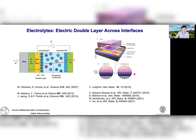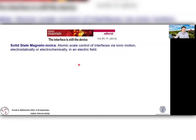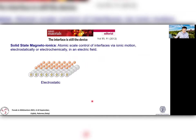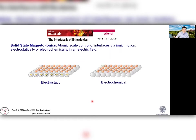More recently, there's also been study illustrating the electrochemical effect, where charge carriers can go into the materials being gated. Both of these aspects have been illustrated, for example, by studies on the metal-insulator transition in vanadium oxides. I will be focusing mostly on solid-state magneto-ionics, which is essentially atomic-scale control of interfaces via ionic motion. The importance is underscored by the famous phrase: the interface is the device. Using electrostatic or electrochemical means, the material properties at the interface can be drastically changed.